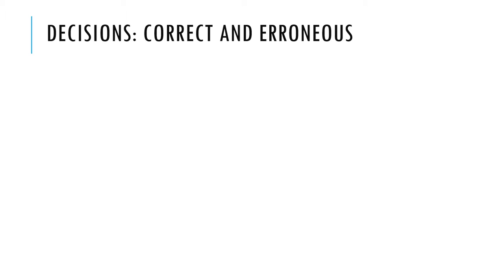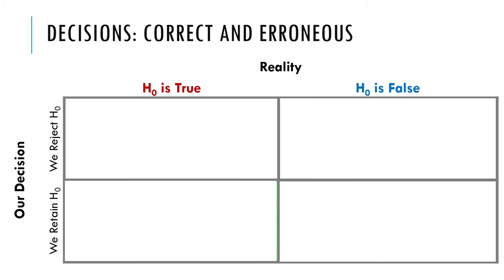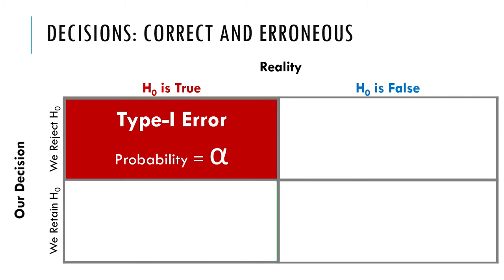To understand power, you have to flash back to when we talked about the different decisions that can be made during hypothesis testing. Some of them are correct decisions and some of them are errors. We've got a two-by-two table with four possibilities. The reality of the null hypothesis could be that the null is true or false, and our decision could independently be whether we retain or reject it. If the null hypothesis is true and yet we reject it, that's a Type 1 error — that's very bad.